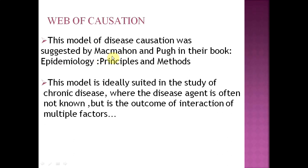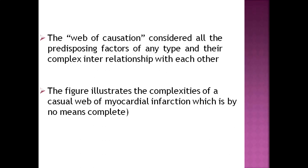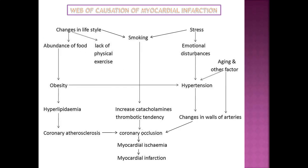The last concept is the web of causation — a more complicated concept. This model of disease was suggested by McMahon and Buck, and it is basically suited for chronic diseases — the same diseases we explained with multifactorial causation, but this is more advanced. It involves a lot of factors with intricate relationships between each other; we cannot point out just one or two factors because all factors are interrelated, giving a complex relationship that produces disease.